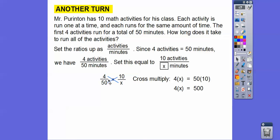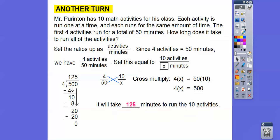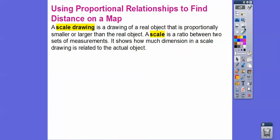Cross multiplying: four times x equals fifty times ten, so four x equals five hundred. Dividing five hundred by four gives one hundred twenty-five. It will take one hundred twenty-five minutes — just over two hours — to run all ten activities.